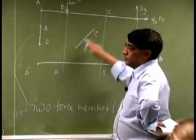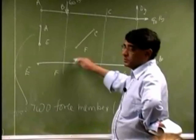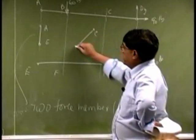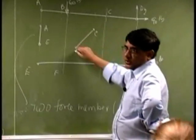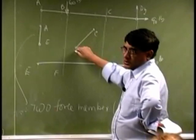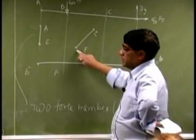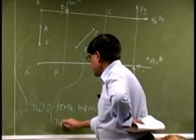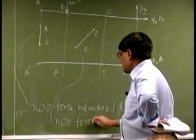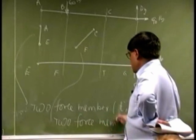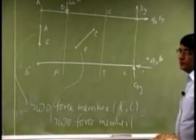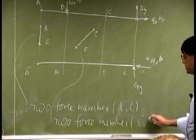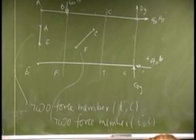Same thing is true for C-F. You got this joint and this joint, there is no force in between. So the forces will be only here and here. So that is another two-force member and the force in that is going to be either tension or compression.